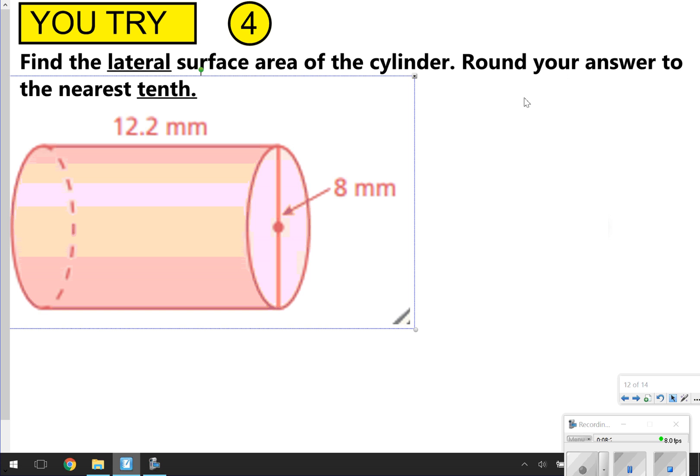Here's where you're going to pause the video and try this one on your own. Before you do, keep in mind, you're finding the lateral surface area rounding to the nearest tenth. And also noticing, too, here, this is not the radius. So think about what you would have to do to the number 8 to change it to the radius. Go ahead and pause, try on your own. Once you're done, click play to check your work.